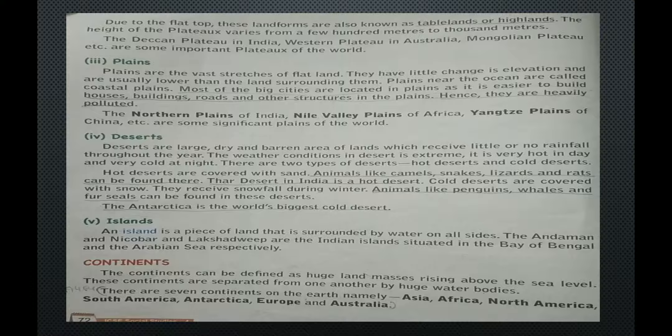Next is islands. An island is a piece of land that is surrounded by water on all sides. The Andaman and Nicobar Islands and Lakshadweep are the Indian islands situated in the Bay of Bengal and the Arabian Sea respectively.